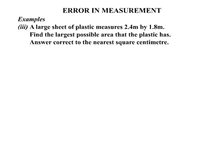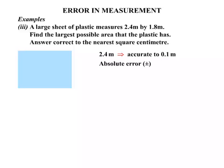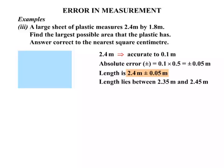A large sheet of plastic measures 2.4 metres by 1.8 metres. Find the largest possible area correct to the nearest square centimetre. The length 2.4 metres is accurate to 0.1 of a metre, so the absolute error is 0.1 times 0.5, which is plus or minus 0.05 metres. Therefore the length lies somewhere between 2.35 metres and 2.45 metres.